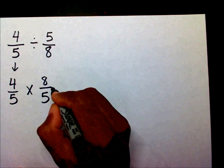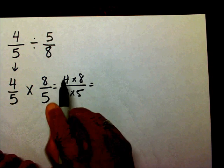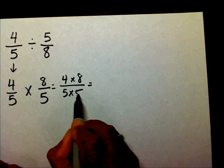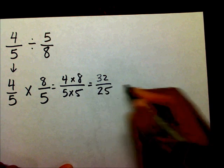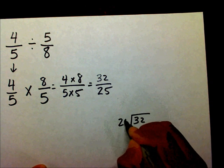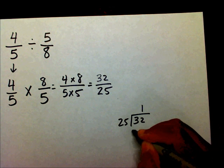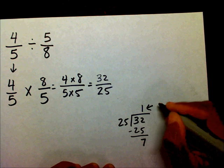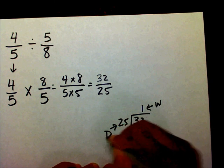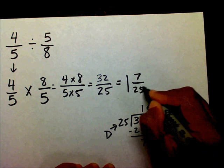Now I'm just going to multiply across: four times eight, and five times five. Four times eight is thirty-two, and five times five is twenty-five. So I'm going to take thirty-two and divide it by twenty-five. Twenty-five goes into thirty-two once, and thirty-two minus twenty-five will give you seven. So my whole number is one, my numerator is seven, and my denominator is twenty-five, and it's already reduced.